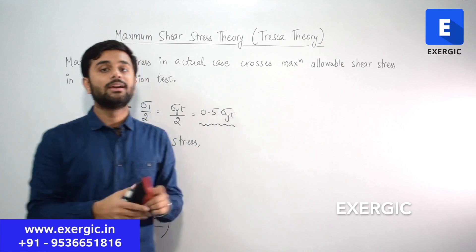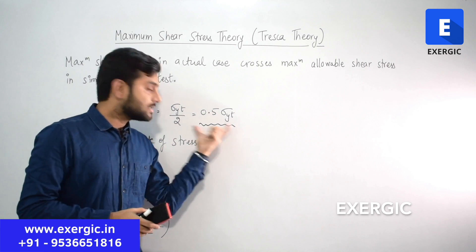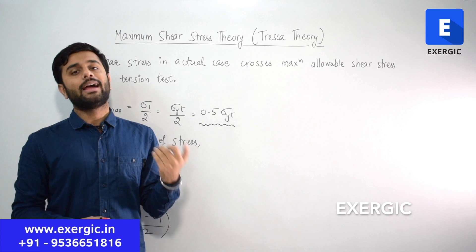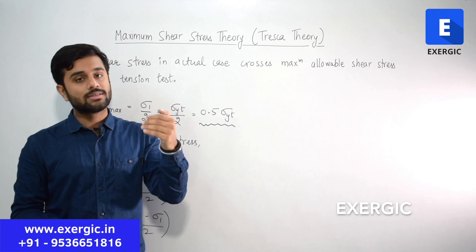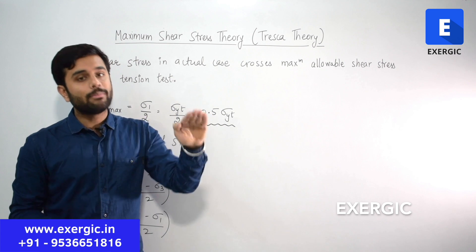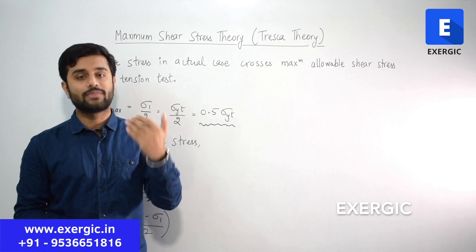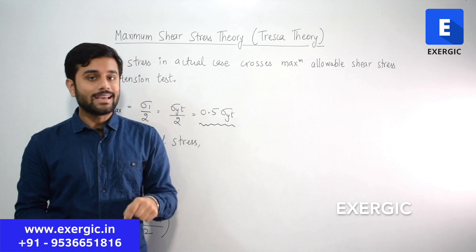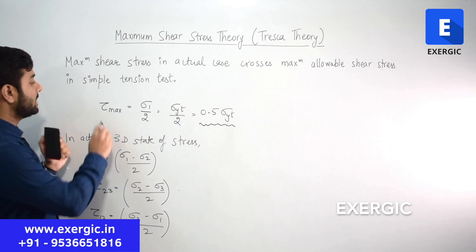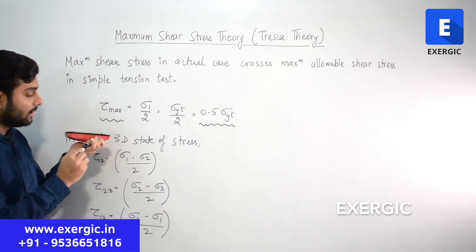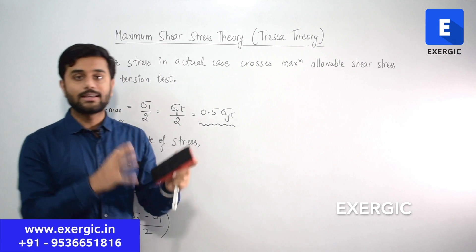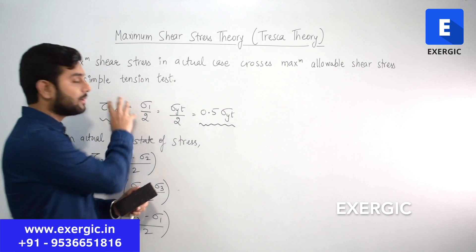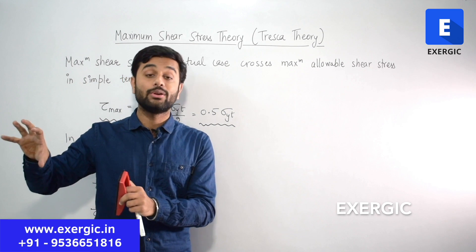This relationship between tau_max and sigma_yt is given by this theory itself and is applicable when applying this theory. Although it is a fairly general relationship used in many places via Mohr circle directly, to be precise, this relationship is strictly a result of the Maximum Shear Stress Theory.